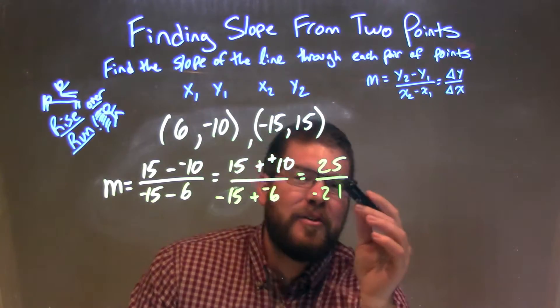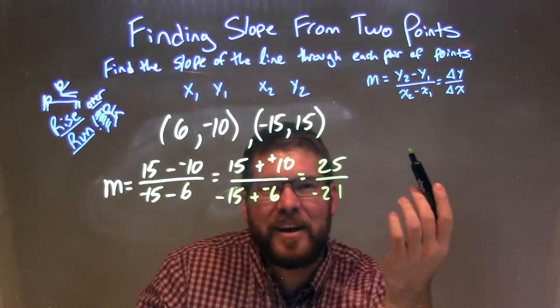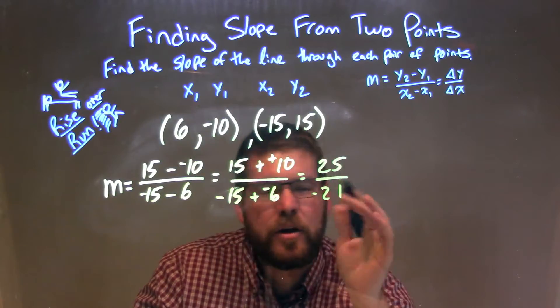Now, is there anything that goes in between? We can simplify this. I don't see any number. 5 goes in 25, but not 21. 3 doesn't go. So we're basically pretty much done here.